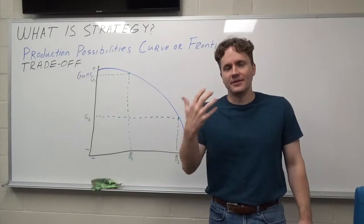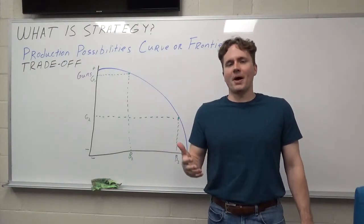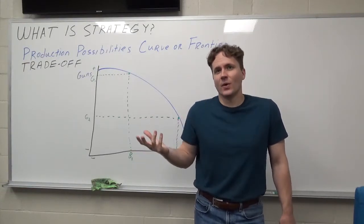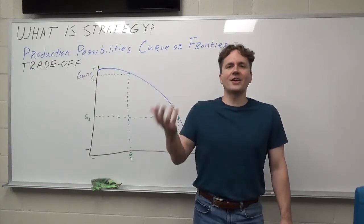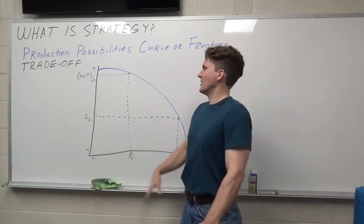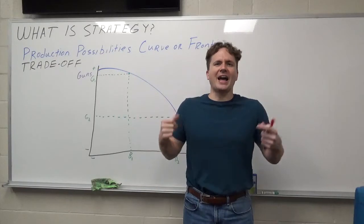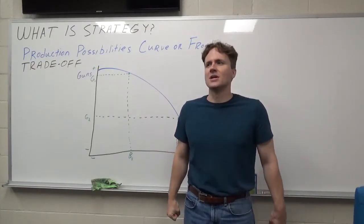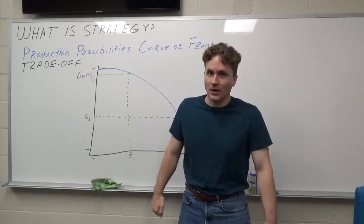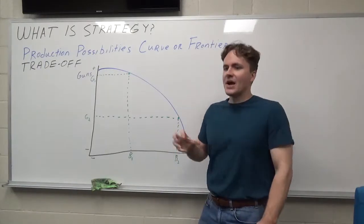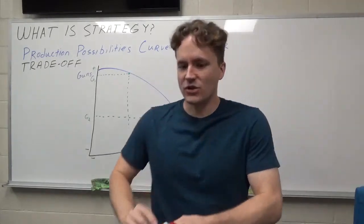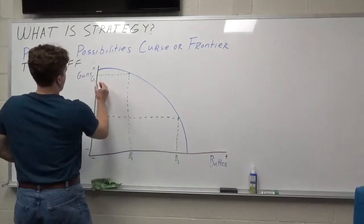Butter is obviously a dairy product, and dairy stuff comes from cows. In the best possible world, a cow can produce this maximum amount of milk to make butter. But cows get sick sometimes — they're living organisms — so they may not produce as much milk as necessary. The factory that makes the butter may have a power outage, workers may go on strike, or equipment may become defective. Same thing with guns: you think you can produce a certain amount, but maybe there's an accident in a mine where you're getting coal to fire up the factories. So you're never actually going to hit this production possibilities frontier. The reality is the theoretical frontier is there, but the true ability of production might actually be well inside it.